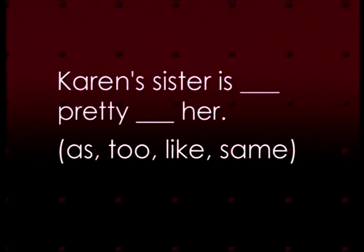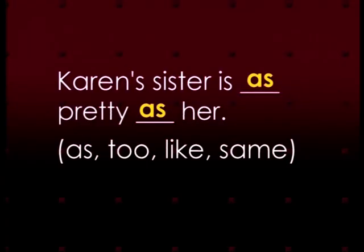Now let's answer the following questions by filling in the blanks with comparison phrases. Number one: Karen's sister is ___ pretty ___ her. Karen's sister and Karen are both equally pretty, so we use the words 'as' and 'as'. Karen's sister is as pretty as her.